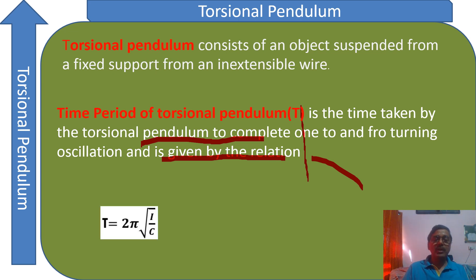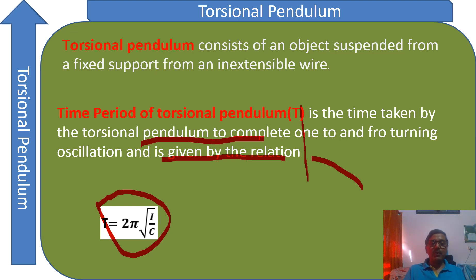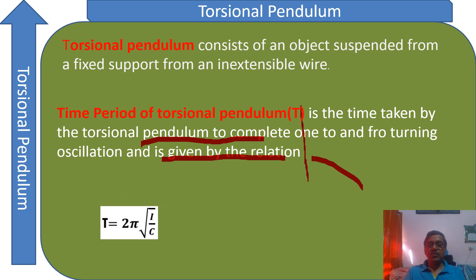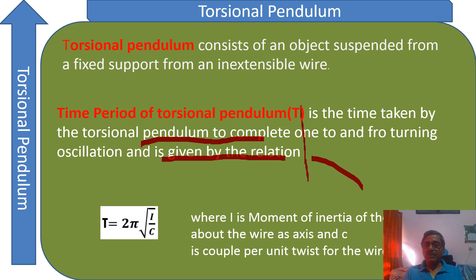The time period of a torsional pendulum is given by T = 2π√(I/C). This is derived by applying Hooke's law, F = -kx, and Newton's second law, F = ma. In rotational motion, moment of inertia plays the same role as mass does in linear motion. Here, I is the moment of inertia of the body about the axis of the wire, and C is the couple per unit twist, which we need to calculate in this lecture.